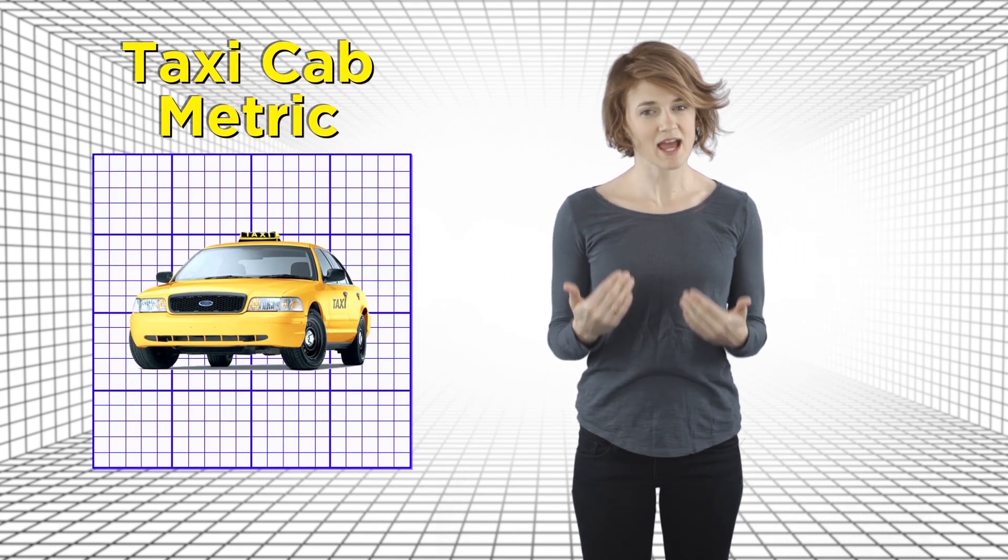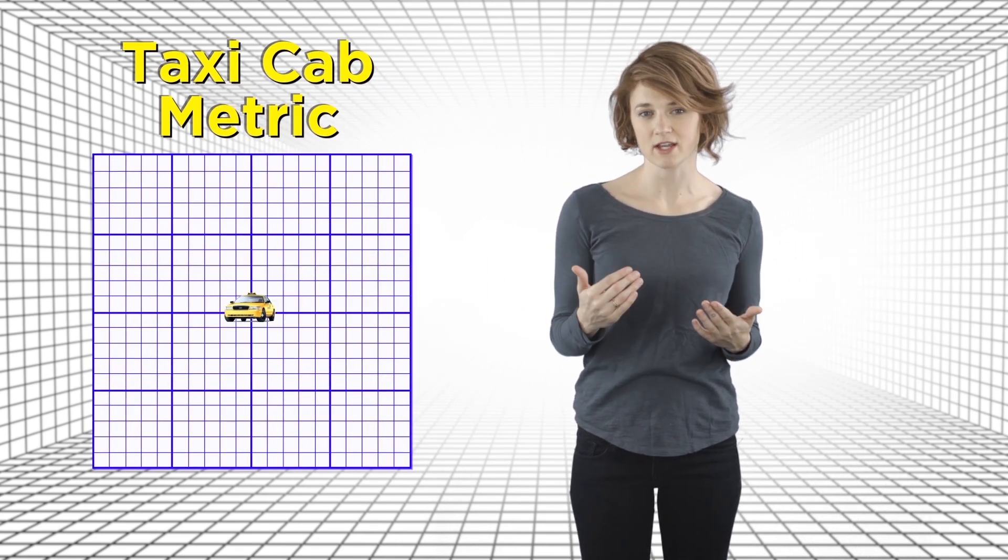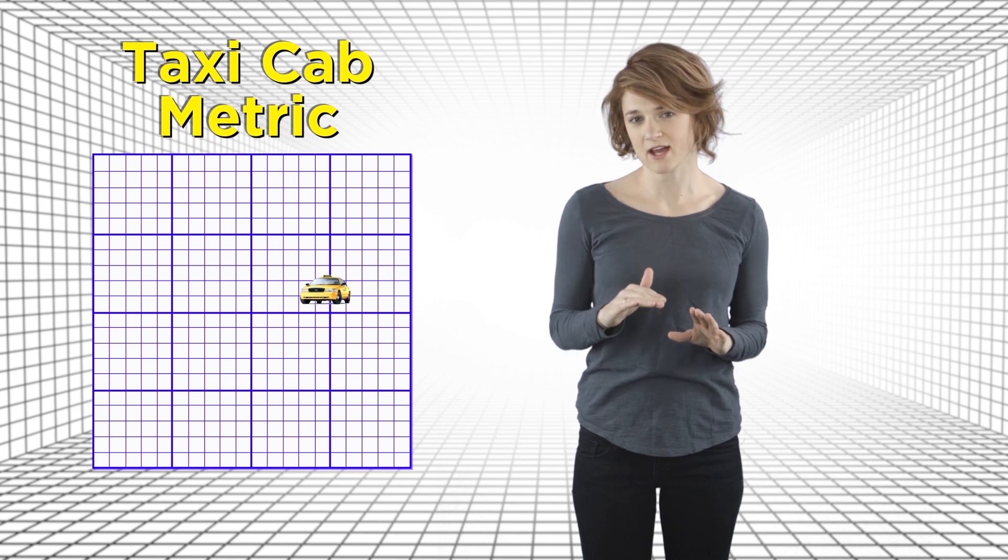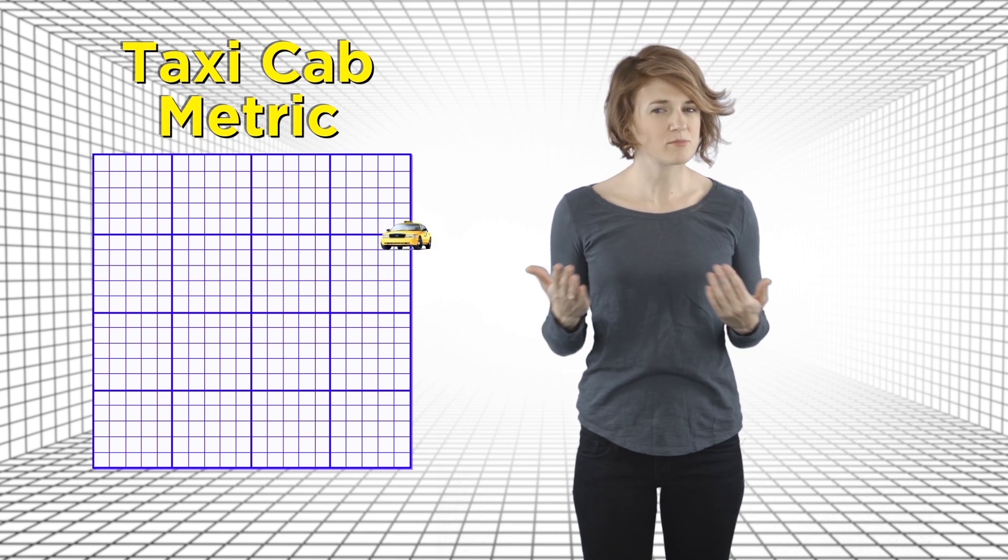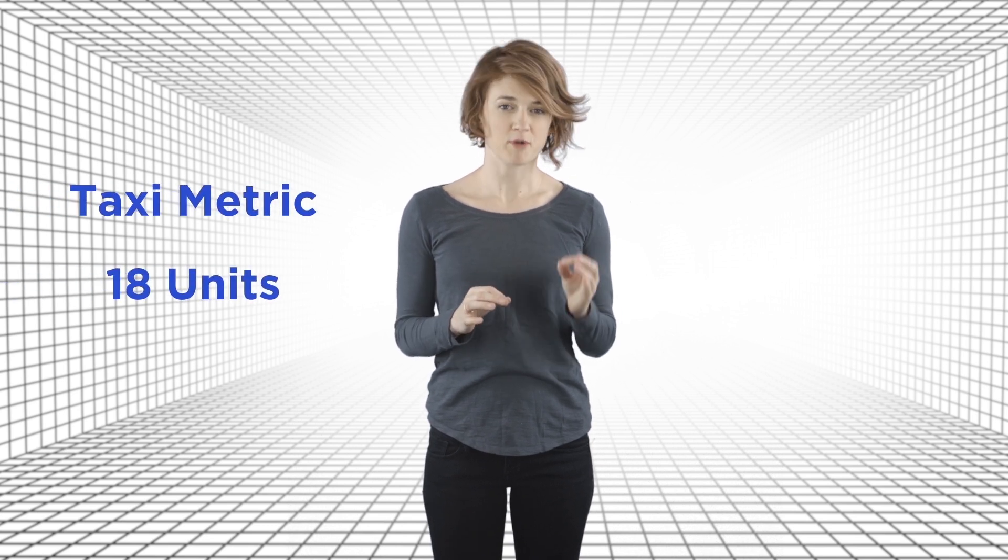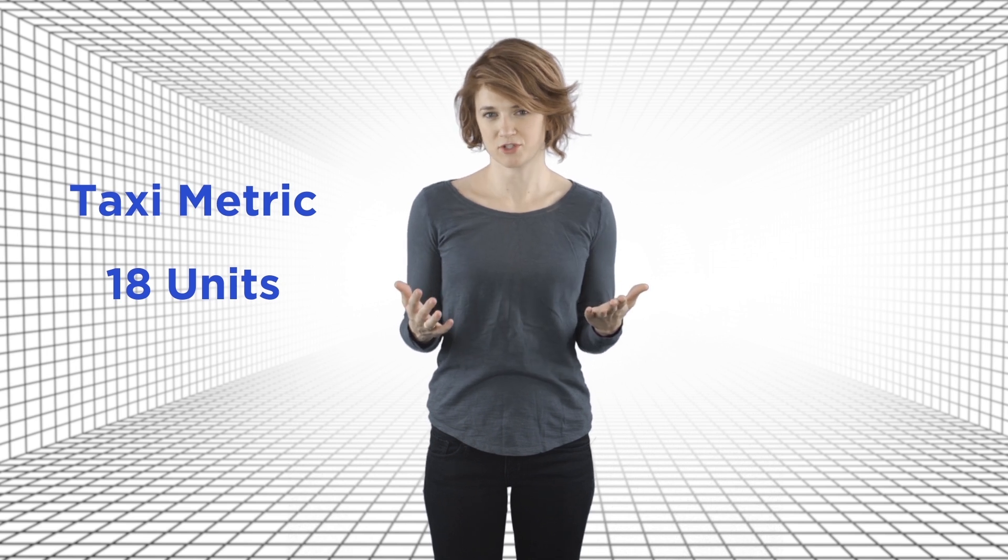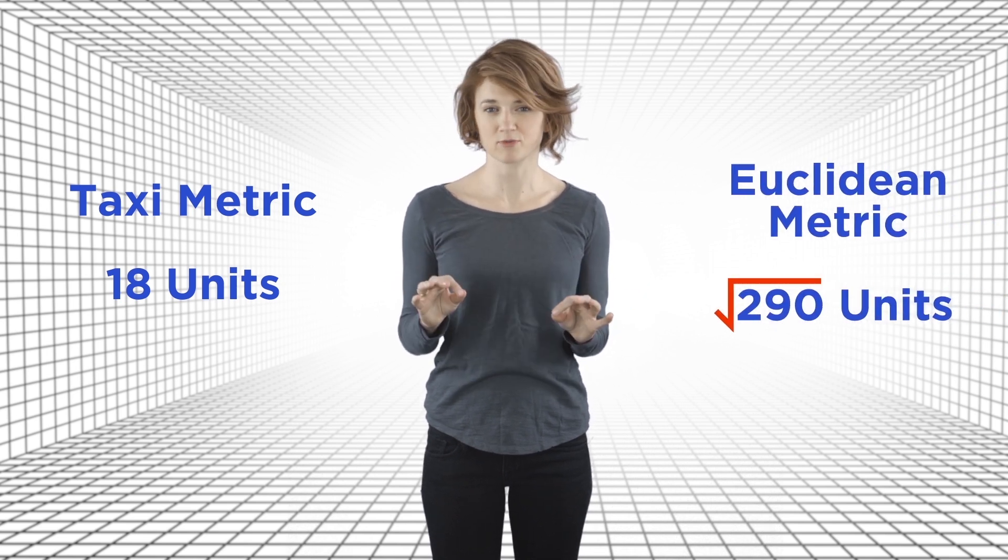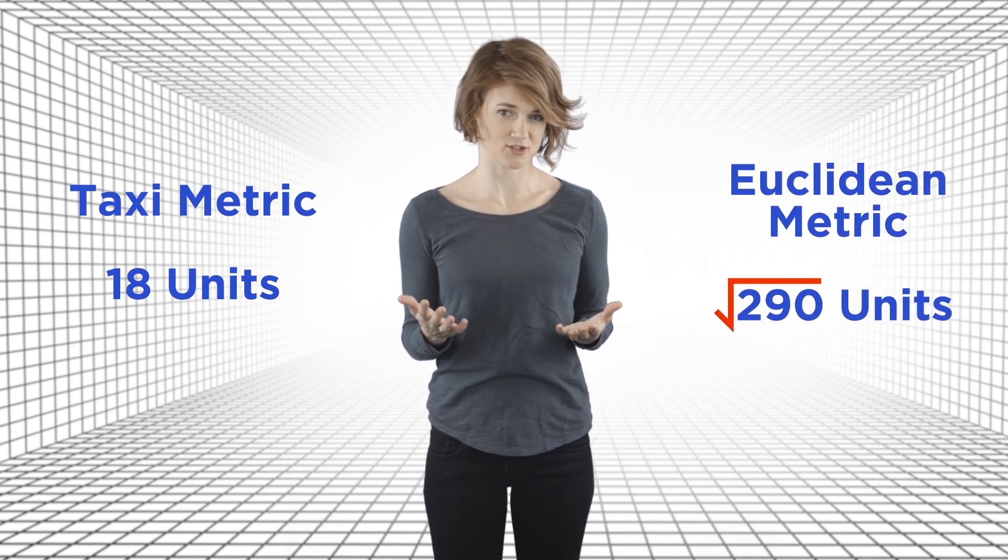Mathematicians call this the taxicab metric, because a taxicab traveling through a city grid can only move up and down or left and right. It can't move diagonally. So the taxi would have to drive a distance of 18 blocks to get from MoMath to MoMA. In other words, the distance in the taxicab metric from MoMath to MoMA is 18 units, not the square root of 290 units that a bird would fly using the Euclidean metric.